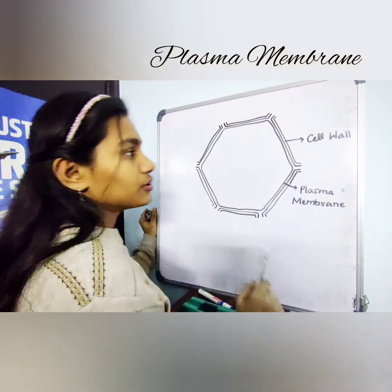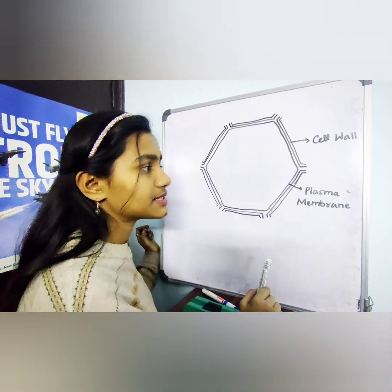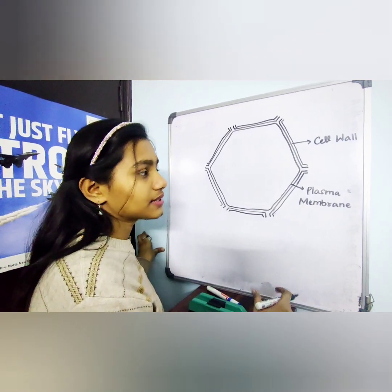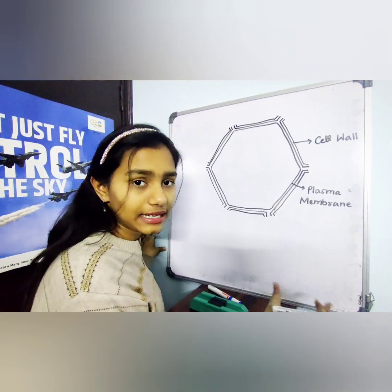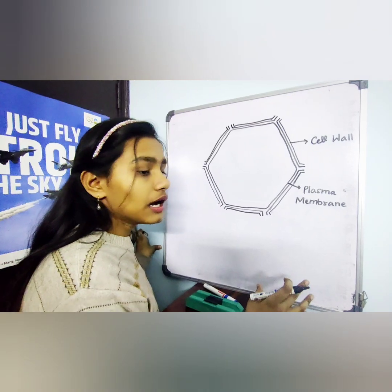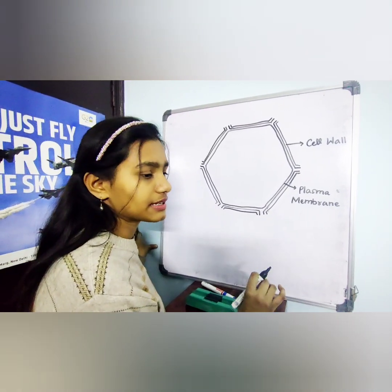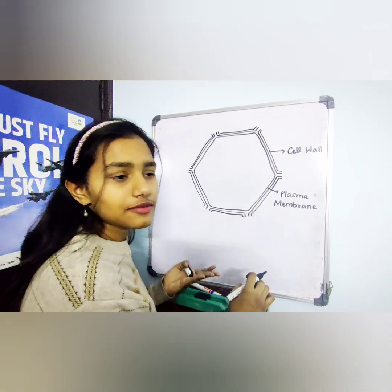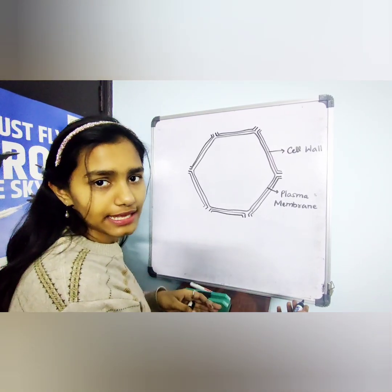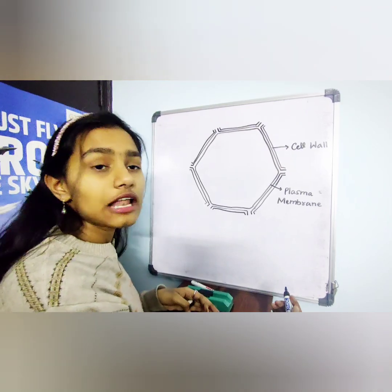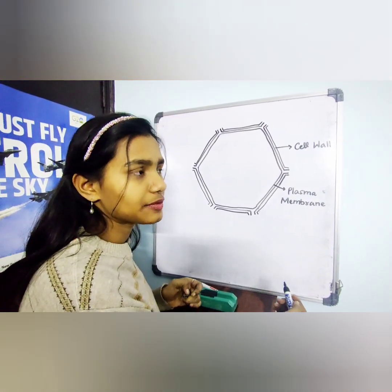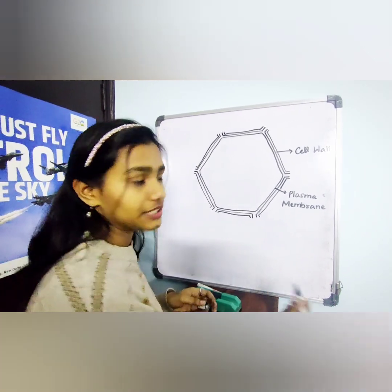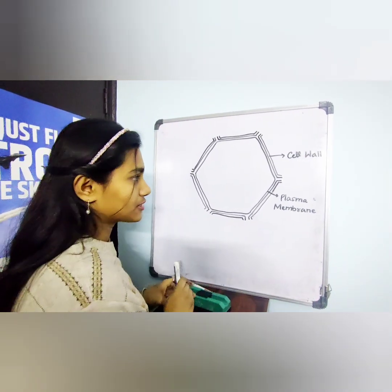I forgot to tell you that the cell wall gives the rigidity or a proper shape to our plant cell and it acts as a protective barrier which helps reduce its chances of getting deformed, or it protects it from injuries. In plants, the cell wall is made up of cellulose. In bacteria, it is made up of pectin. And in fungi, it is made up of chitin. So that was the cell wall.